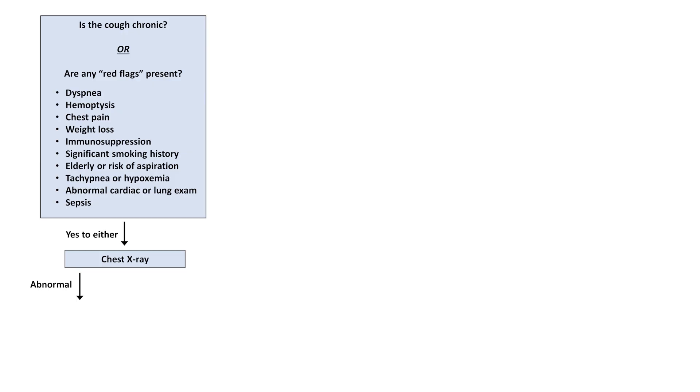If an x-ray is ordered and found to be abnormal, it should of course be further worked up as indicated. Abnormalities that might be seen include focal alveolar opacifications consistent with pneumonia or aspiration, diffuse interstitial opacities consistent with ILD, hyperinflation and flattening of the diaphragms consistent with COPD, or a lung nodule or masses consistent with cancer.